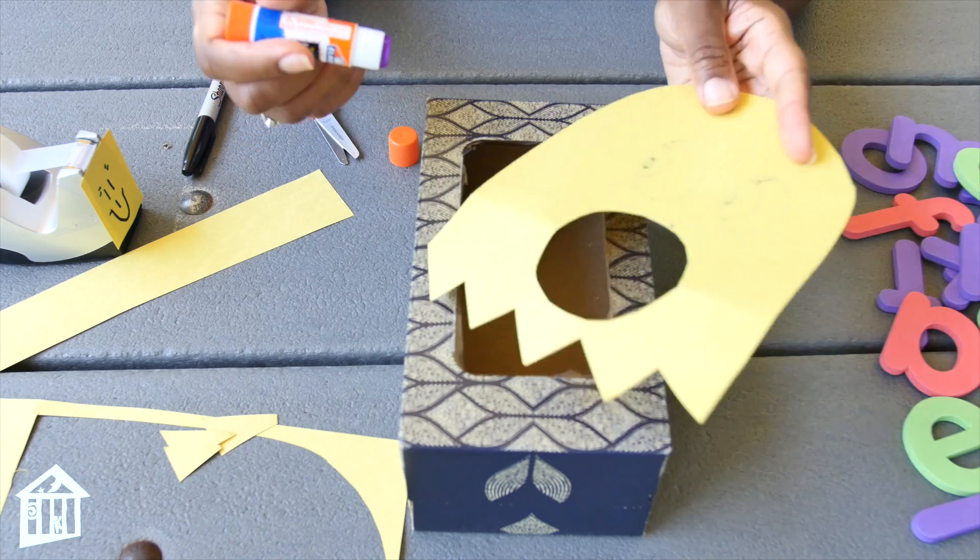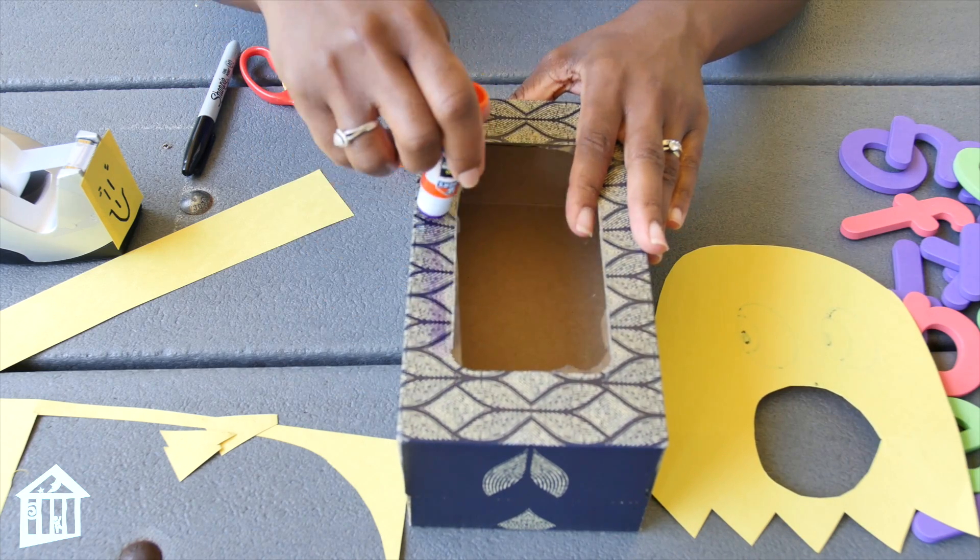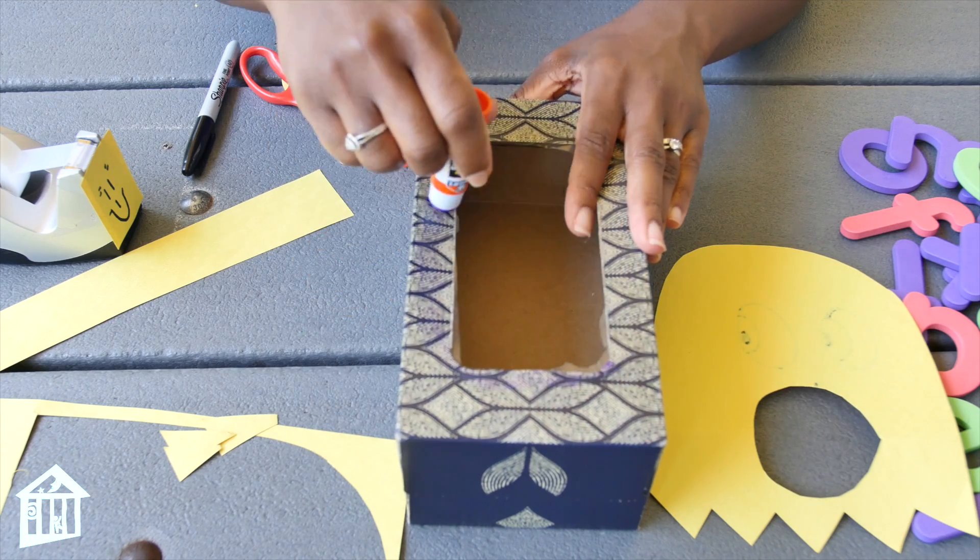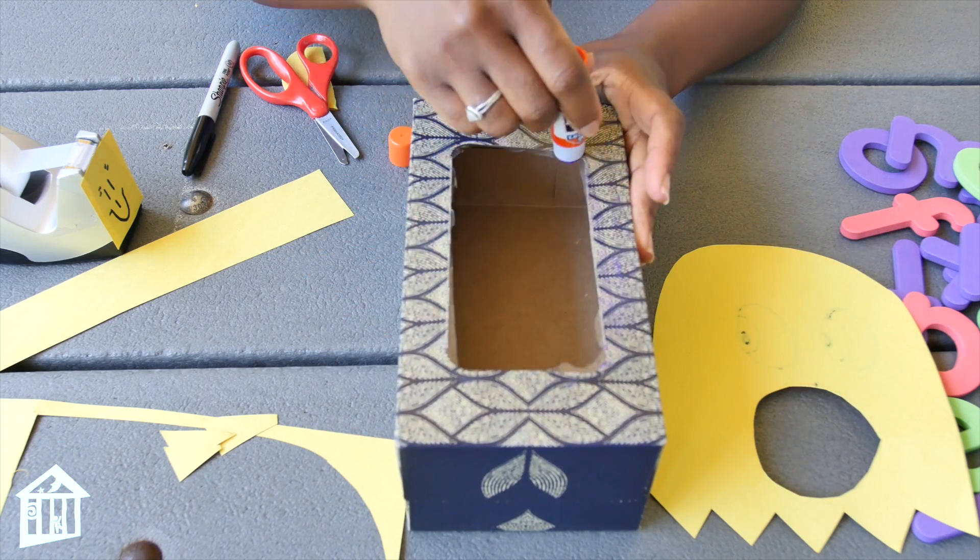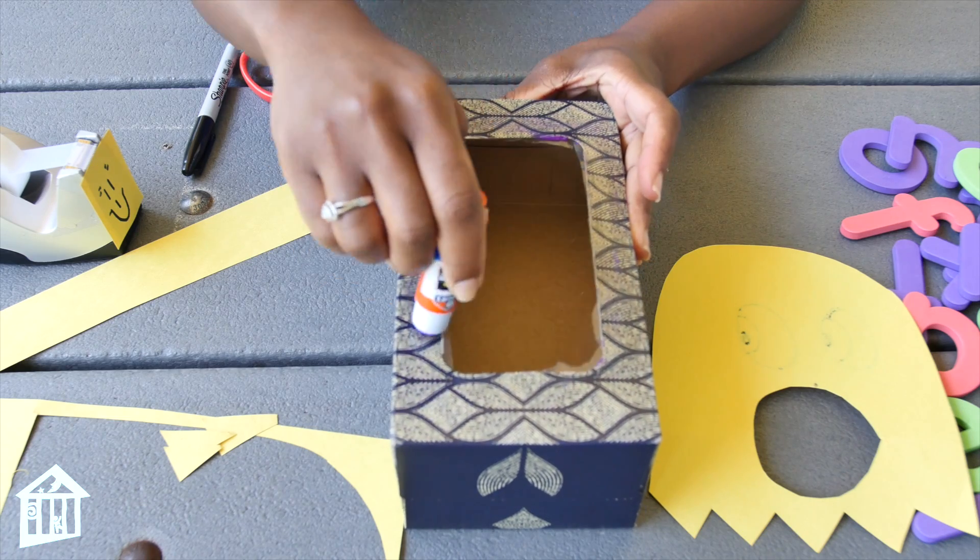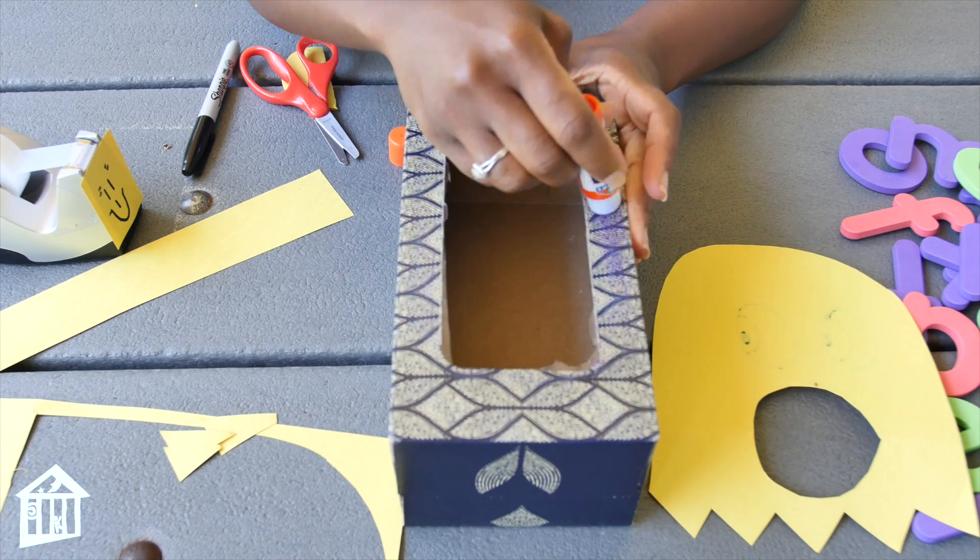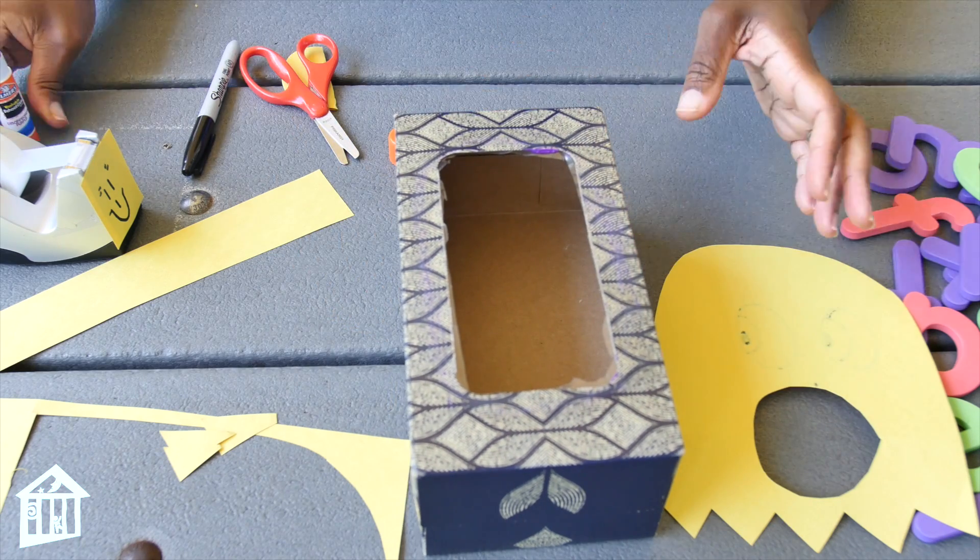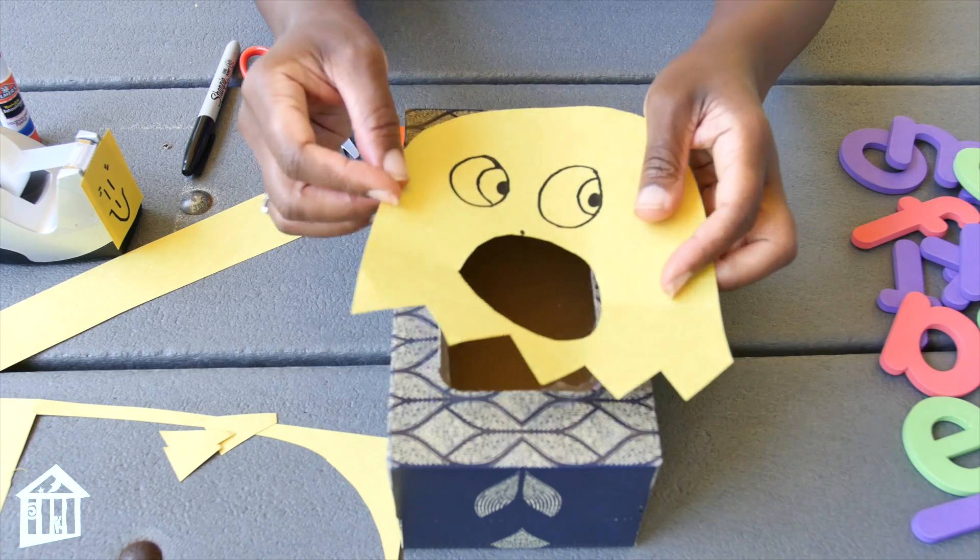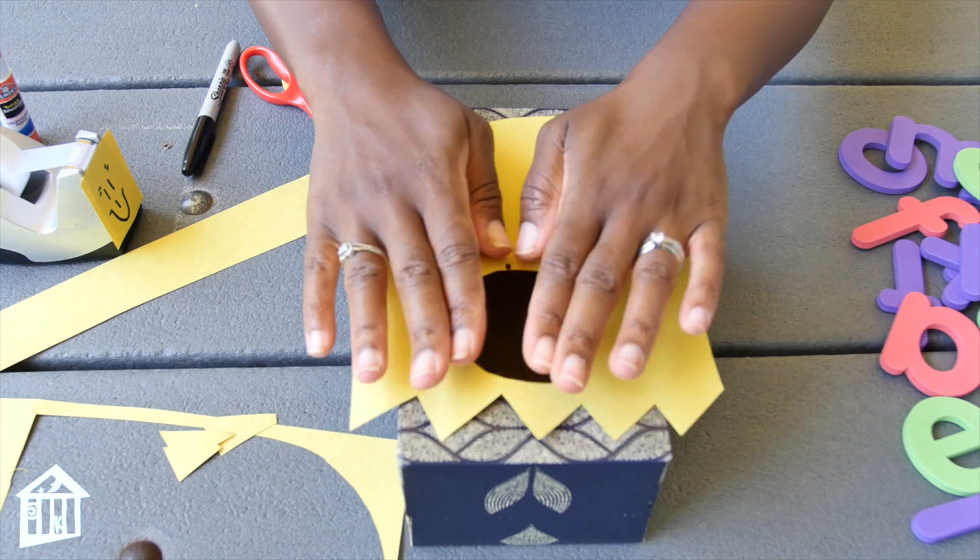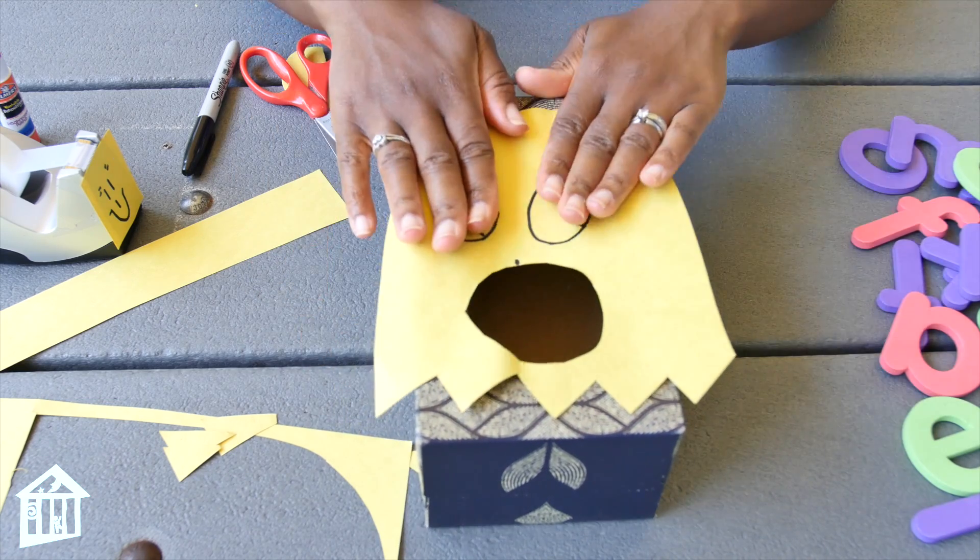Take your glue stick or your glue, whatever you have, and just go liberally around the edge of it. If you don't have a tissue box, you can actually use like a cereal box, anything that is a box that you can create an opening. I prefer this tissue box because guess what? It already has an opening. So here we go. First part is done.